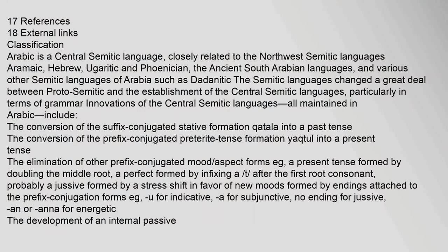Arabic is a Central Semitic language, closely related to the Northwest Semitic languages Aramaic, Hebrew, Ugaritic and Phoenician, the ancient South Arabian languages, and various other Semitic languages of Arabia such as Dadanitic. The Semitic languages changed a great deal between Proto-Semitic and the establishment of the Central Semitic languages, particularly in terms of grammar. Innovations of the Central Semitic languages, all maintained in Arabic, include the conversion of the suffix-conjugated stative formation katala into a past tense, the conversion of the prefix-conjugated preterite tense formation yoctal into a present tense, the elimination of other prefix-conjugated mood/aspect forms, and the development of an internal passive.